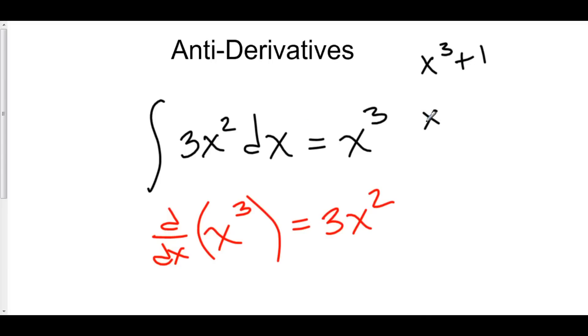We could have x cubed plus 2. Or x cubed plus 100,000. I don't know. Or x cubed minus pi. Because the derivative of pi is still 0.